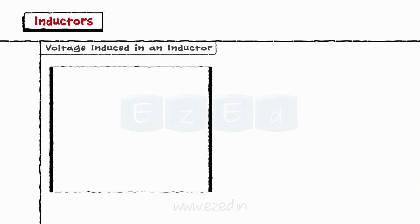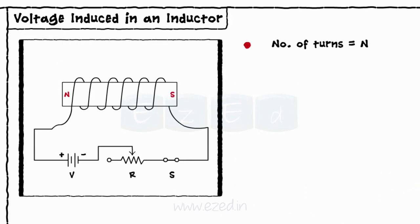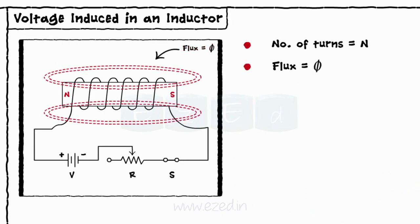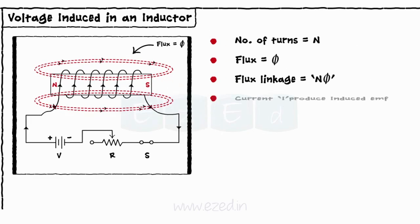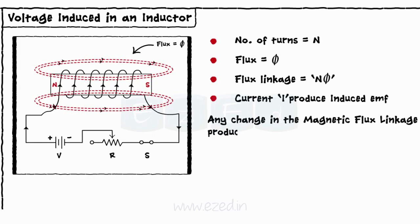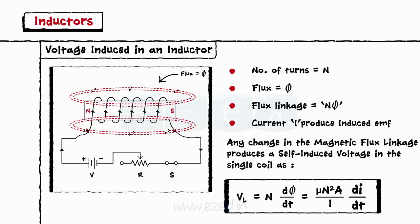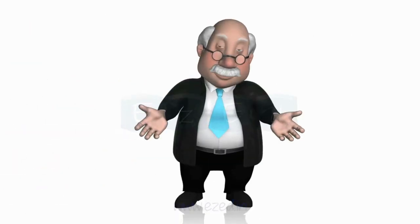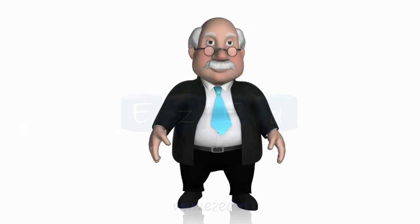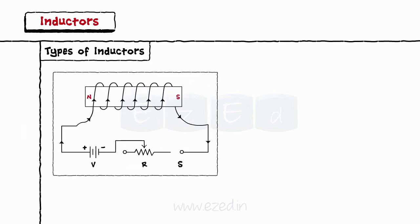Let's find the voltage induced in an inductor. If a coil of N turns links the magnetic flux phi, then the coil has a flux linkage of N phi. Any current I that flows through the coil will produce an induced EMF. According to Faraday's law, any change in this magnetic flux linkage produces a self-induced voltage in the single coil as VL equal to N into dφ/dt, equal to μN²A/L into di/dt. Pay attention — this is important. Let's see the concept of back EMF now.